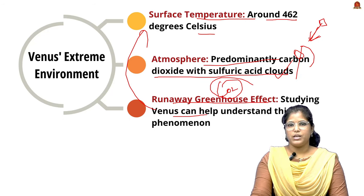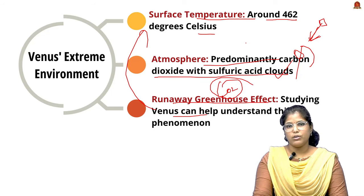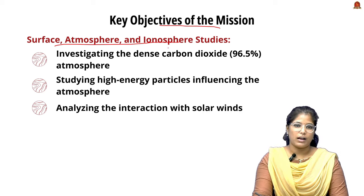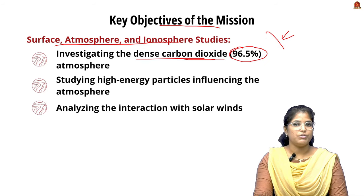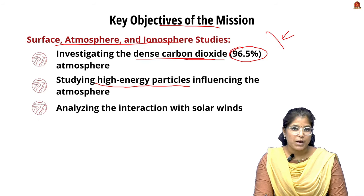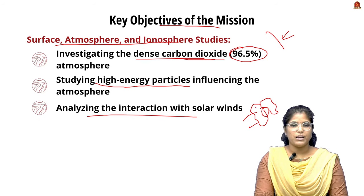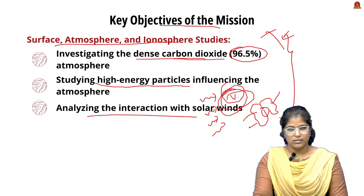Understanding Venus's atmosphere could help us mitigate extreme climate events. The key objectives of the mission include understanding the surface, atmosphere, and ionosphere — the outermost layer of Venus's atmosphere. The mission will investigate the dense CO2 atmosphere (about 96.5% of Venus's atmosphere) and study high-energy particles that influence it.